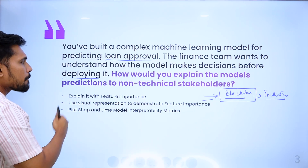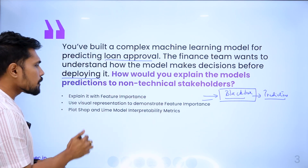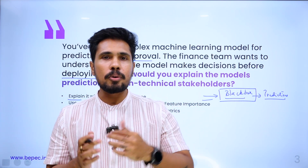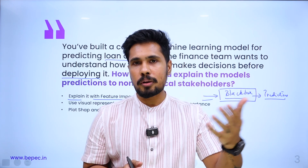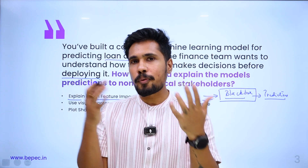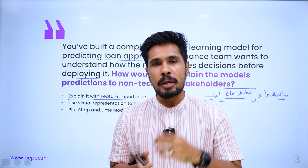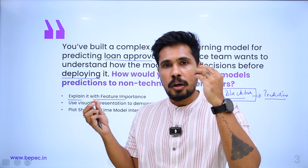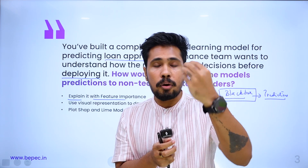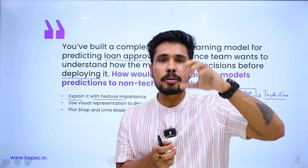How would you explain the model predictions to a non-technical stakeholder — like a manager or banking person? You need to explain feature importance. For example, while coding, if you selected a decision tree, you can plot feature importance. If there are 30 or 40 parameters, you can identify the most important features and communicate to stakeholders which features the algorithm used in order to learn and achieve its accuracy.